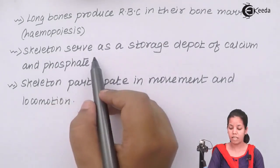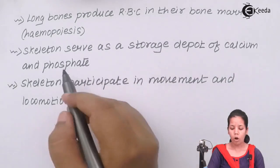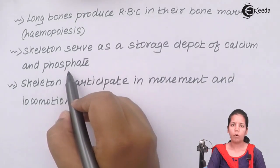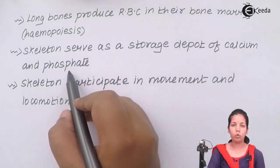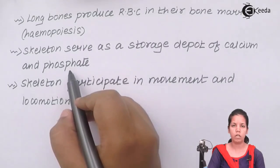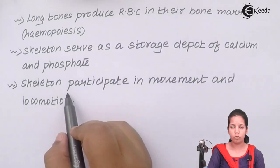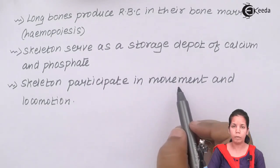The skeletal system also serves as a storage deposit for calcium and phosphate. The calcium intake in your body, as well as your phosphate intake, are deposited in the hollow structure of your bones — your leg bones, hand bones, etc.